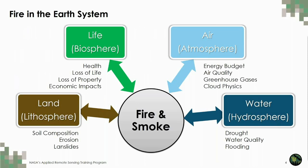The Earth is a system made up of smaller subsystems, or spheres: the lithosphere, or land; the hydrosphere, water; the biosphere, life; and the atmosphere, air. Fires are a unique phenomenon in that they change, and are changed by, each of these spheres. In the atmosphere, smoke particles can affect the Earth's energy budget through the scattering and absorption of radiation, and by altering cloud properties and lifetimes. Fires are also a large and variable source of greenhouse gases, such as carbon monoxide and carbon dioxide, which can also affect the energy budget.